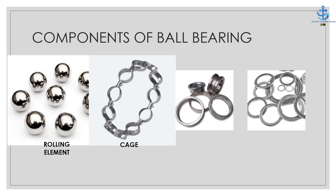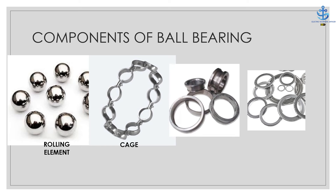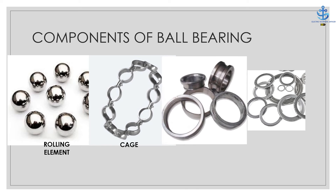Inner race — this is the part that is mounted on the rotating shaft and tends to rotate with the shaft. Outer race — this is the part that is mounted to the housing and is stationary. It also serves as a means for transferring the loads from the bearing to the housing.